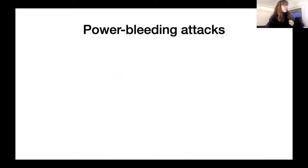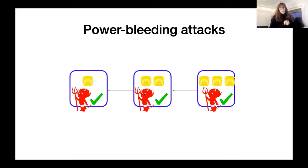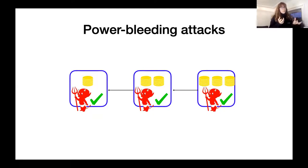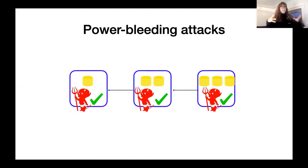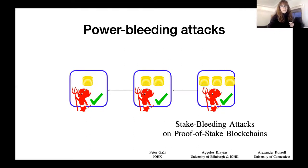Another attack on proof of stake is called a stake bleeding attack. In each block, new coins are minted. In a proof-of-stake system where your power depends on the amount of coins you have, if you are an adversary creating an alternative chain, for each block you create you get all the minted coins to yourself. Basically, you can inflate your stake much more than you should — this is the stake bleeding attack.